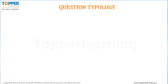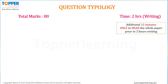Let us begin with the paper pattern and question typology. This year's chemistry paper will be of total 80 marks with duration 2 hours. Remember that these 2 hours are for writing the paper. Before these 2 hours, the question paper will be given to you 15 minutes prior, just to read the whole paper thoroughly. These 15 minutes you should utilize to select the easiest questions for which you are confident about and answer those questions first.